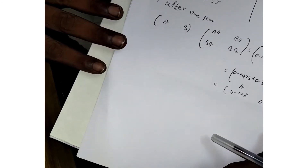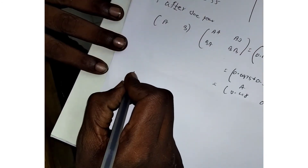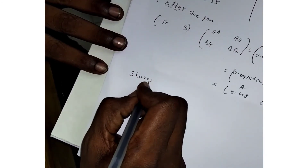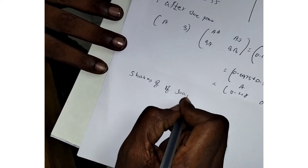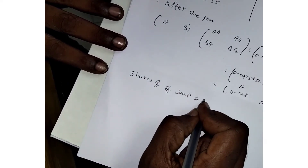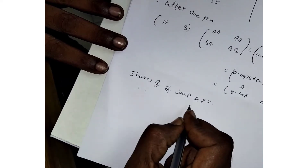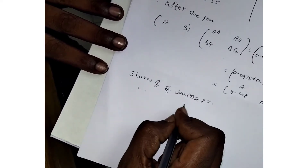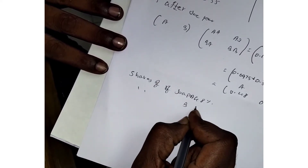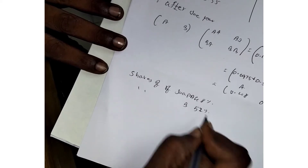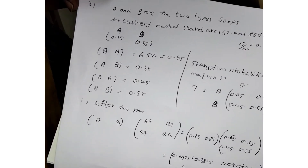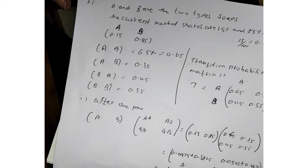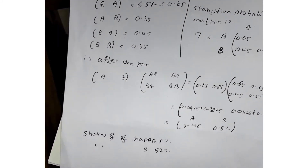After one year, the market share of soap A is 48 percentage and the market share of soap B is 52 percentage. This answers the first part of the question.